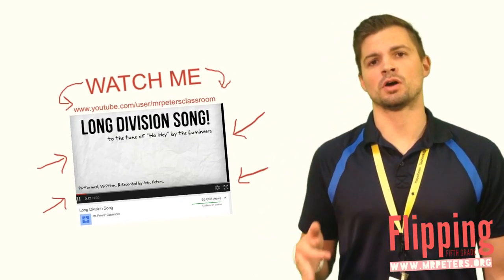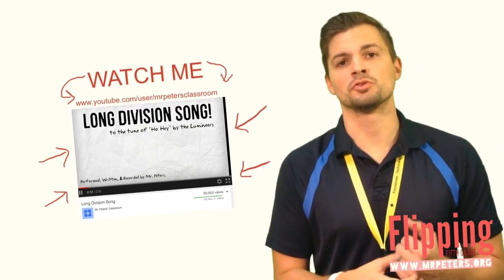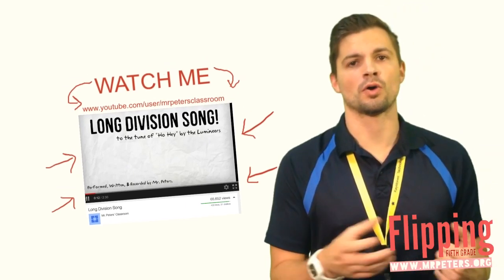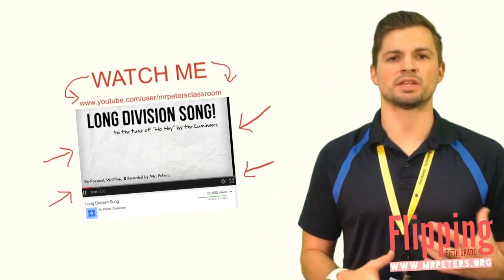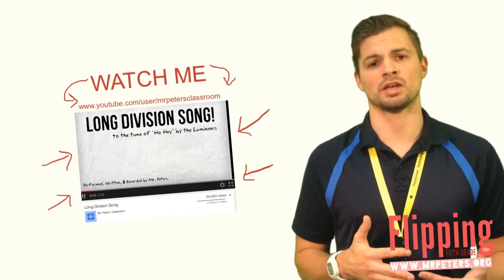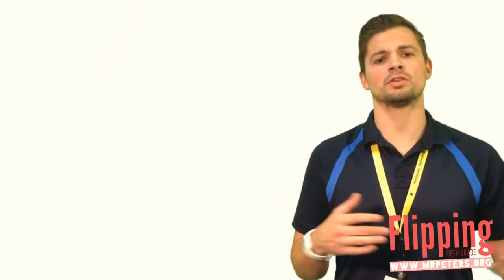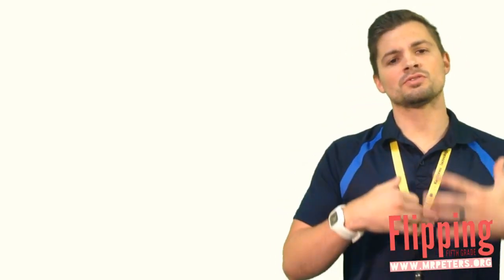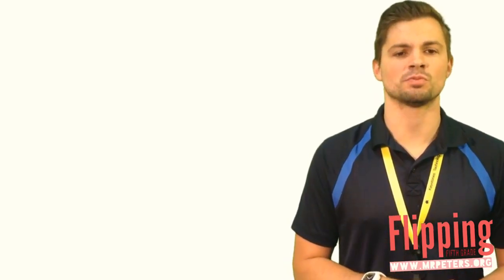It is to the tune of the Lumineers, Ho Hey, and it'll help you get those steps down because it's very important that you get these steps. As you already know how to use a model because we did it in the last lesson with money, we need to figure out how to do long division the practical way, because not every problem deals with money.